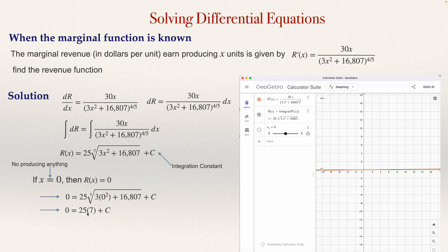So c equals negative 175, and then the revenue will be given by 25 multiplying the fifth root of (3x² + 16,807) minus 175. Let's type here the answer. So that will be the expression that defines the revenue in terms of the units produced.